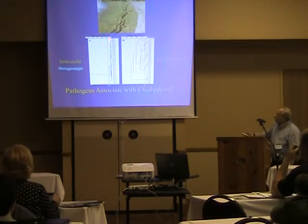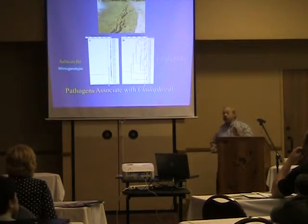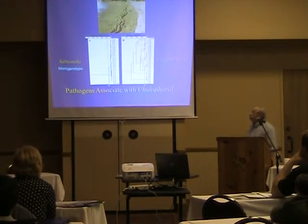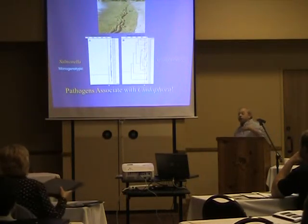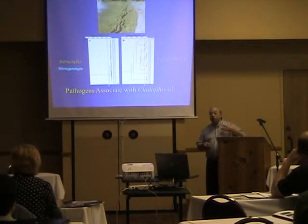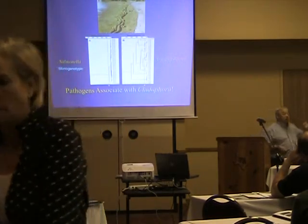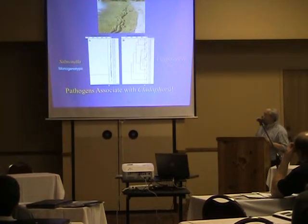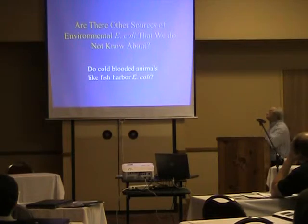We used rep PCR with the box primer to look at the genotypic distribution of salmonella and campylobacter found on cladophora. It was very clear that salmonella organisms are mono-genotypic — the same strain found on cladophora no matter where you go in the lake — whereas campylobacter varies a lot. Every year the population of salmonella changes, and this mono-genotypic strain survives best during the summer season. This is the Newport variety of salmonella, which is quite dangerous.